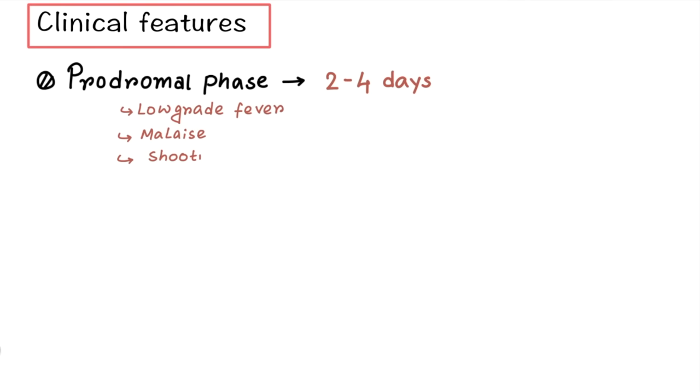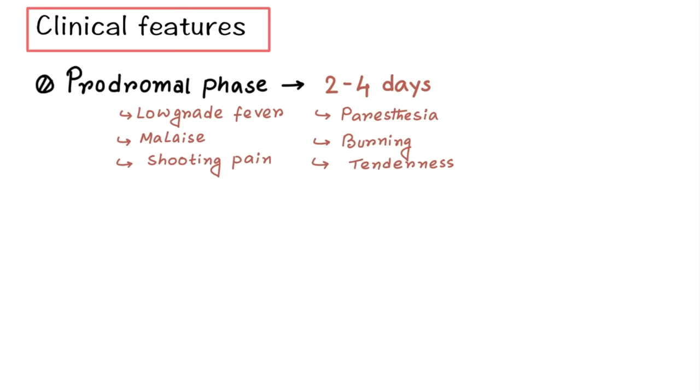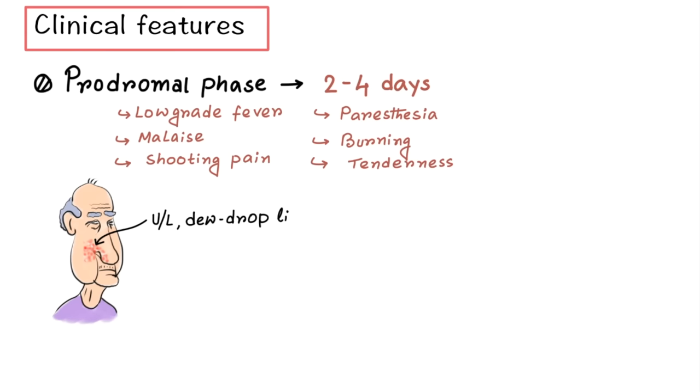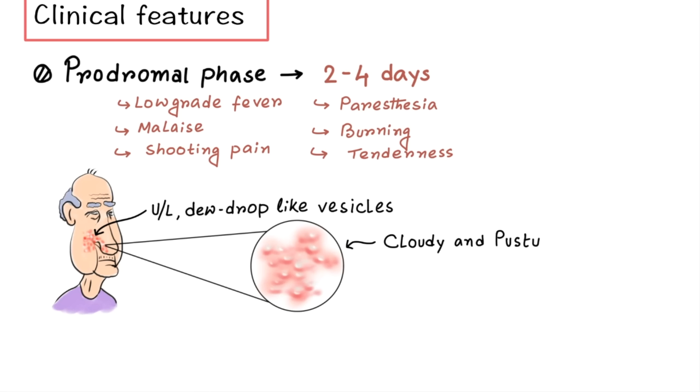Now let's discuss about the clinical features. Initially you can find some prodromal signs and symptoms which last for 2-4 days like low grade fever, malaise, shooting pain, paresthesia, burning and tenderness along the course of nerve. Then some unilateral multiple dewdrop-like vesicles appear on erythematous base showing single dermatome involvement. Those vesicles turn cloudy and pustular and finally burst and heal within 2-4 weeks.